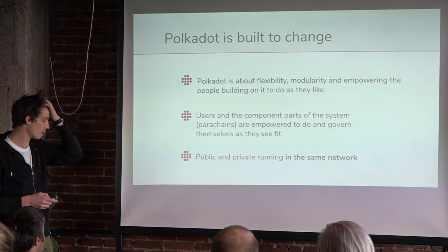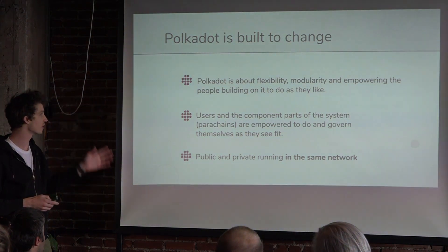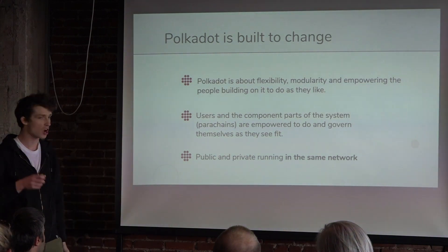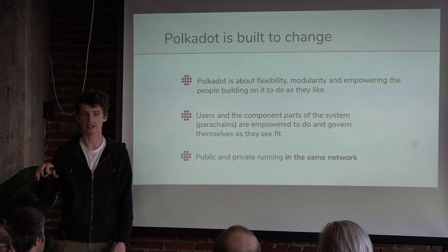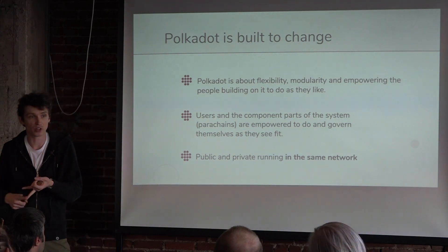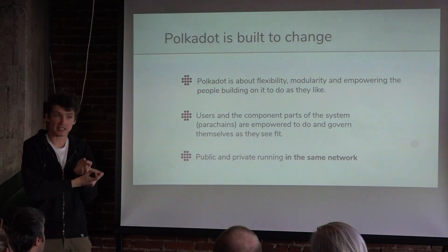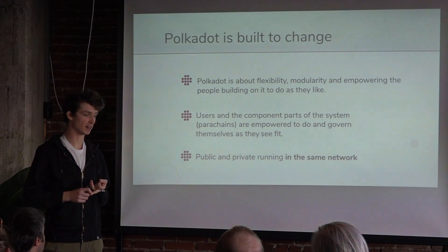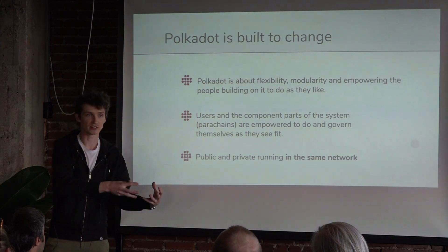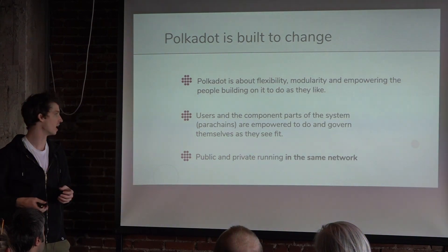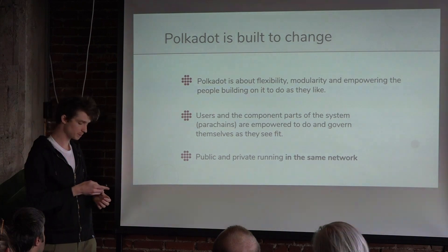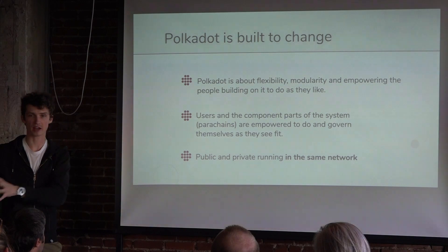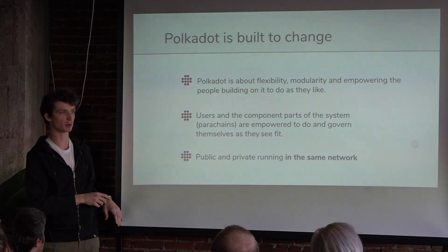Polkadot's component systems are empowered to do as they want. They can have their own governance, their own token, and even their own consensus in some cases. It's up to them to opt in or opt out of the system — they have complete control. They can also do so in a private way, which is useful for enterprises that want to keep some data away from the public blockchain.